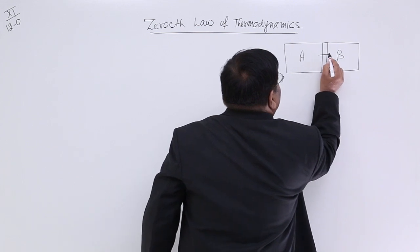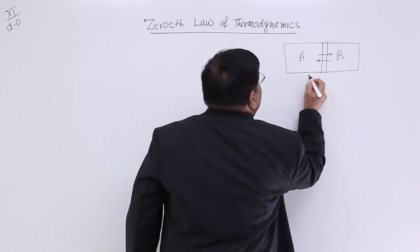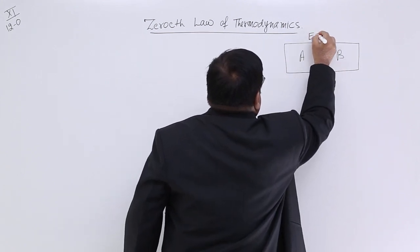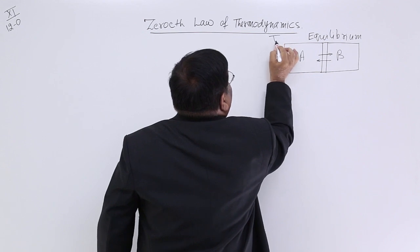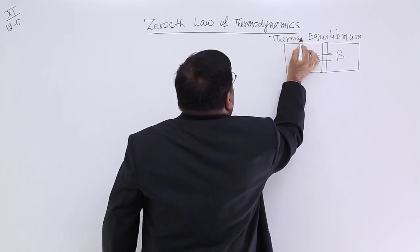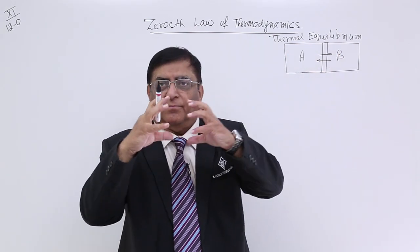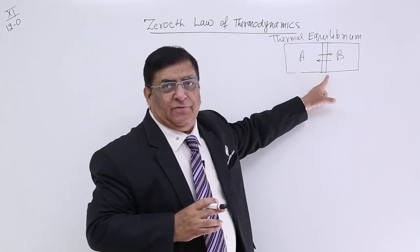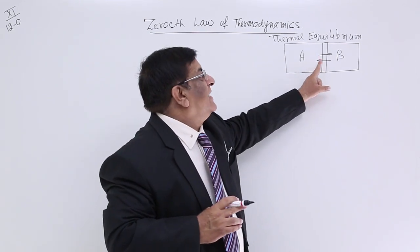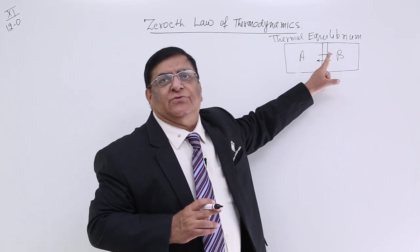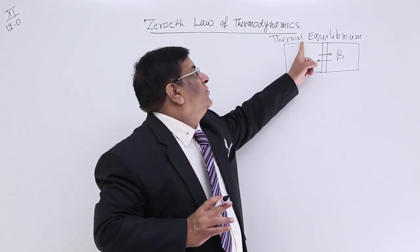If the transmission of heat has stopped — no transmission — that state we call equilibrium. Because this is heat equilibrium, we call it thermal equilibrium. When two systems are combined with a diathermic wall between them and after some time the passing of heat from one system to the other stops, that situation is known as thermal equilibrium.